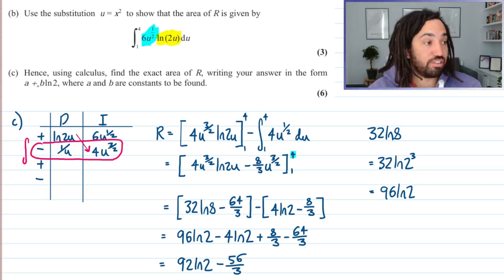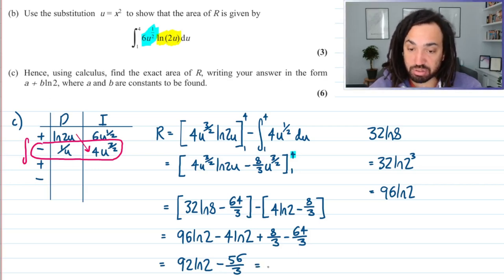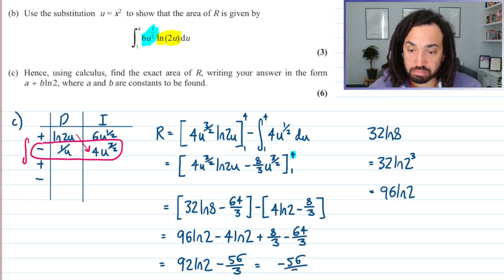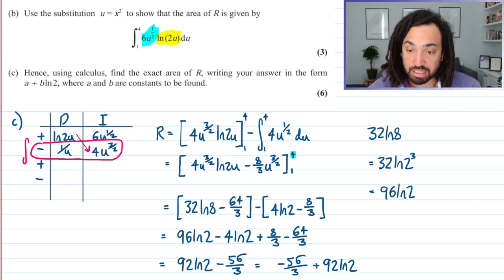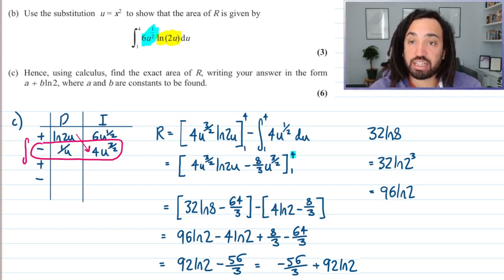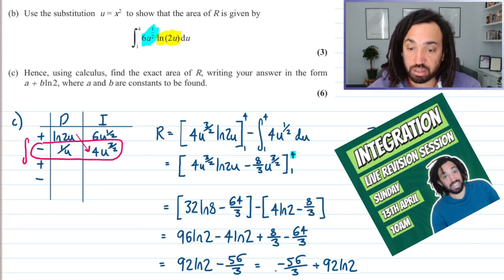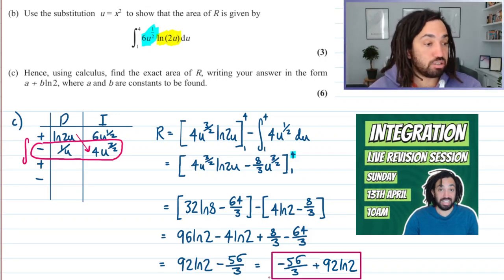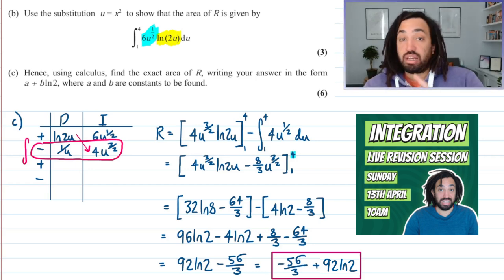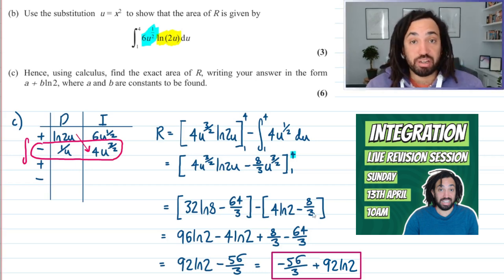That's in the form they want, adding the rational part and the logarithmic part together. That is my final answer. Check out my live revision session for more tips and tricks on integration. I'll see you in the next one. Bye for now.